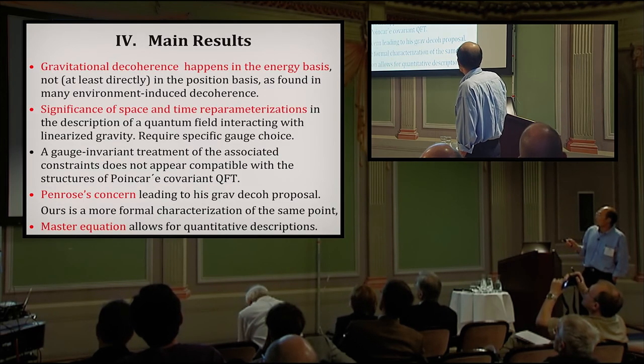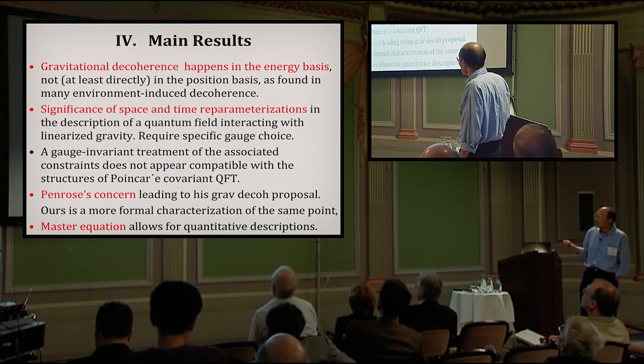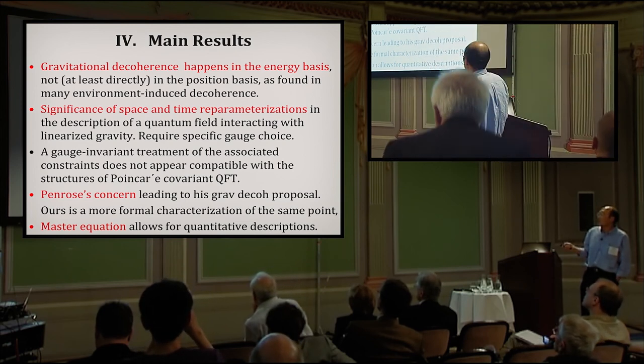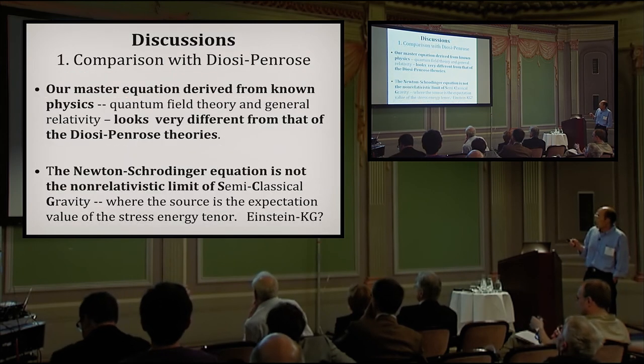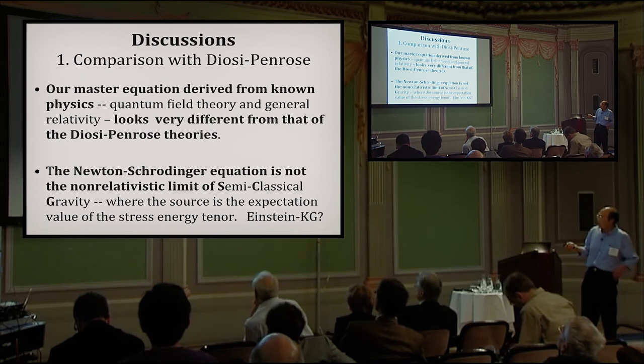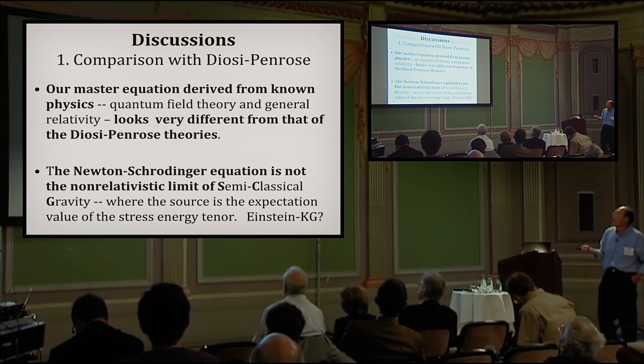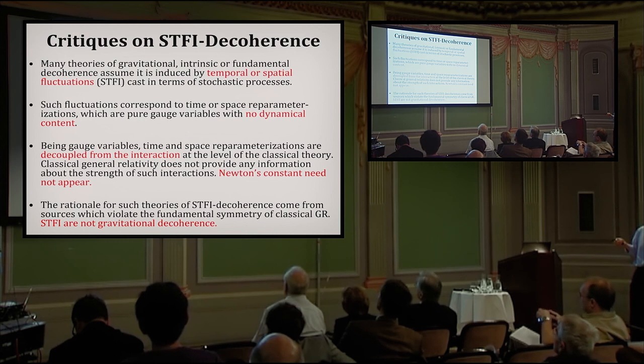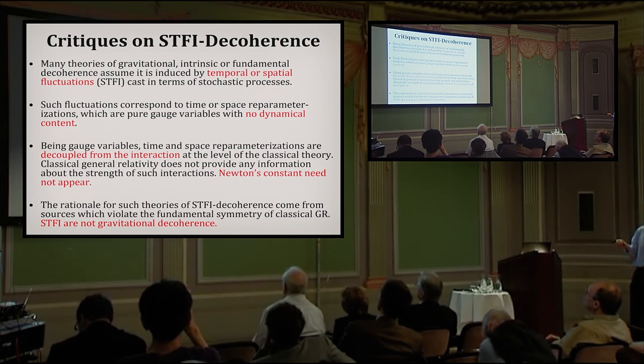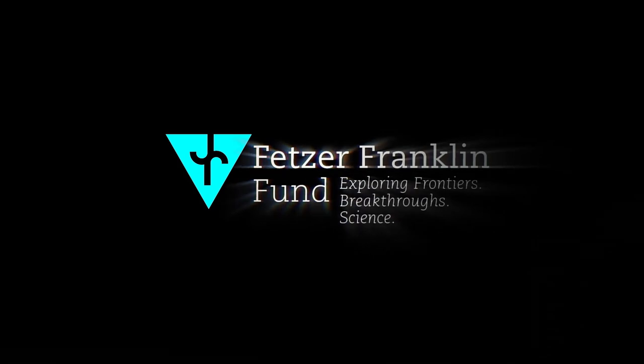So main results, I think I've said all of these already. The significance of space and time reparameterizations in the description of quantum field interacting with linearized gravity requires specific gauge choice. And gravitation decoherence happens in the energy basis. Comparison looks very different from that of Laos' master equation. That was the critique on the space-time fluctuation induced decoherence because there's no dynamical content in it if you believe in general relativity. And in fact Newton's constant actually does not appear. So it is not gravitational decoherence stated.